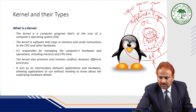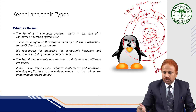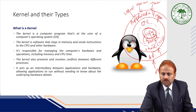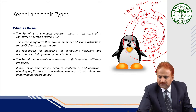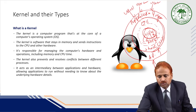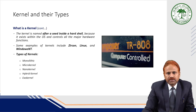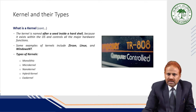Application programs are basically written in high-level languages, but the machine or hardware understands machine language, that is, low-level programs. So directly the application programs do not interact with the hardware; it is the part of the operating system known as the kernel that directly interacts with the hardware to get the job done. The kernel is named after a seed inside a hard shell because it exists within the operating system and controls all major hardware functions.